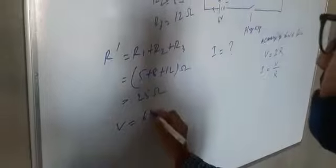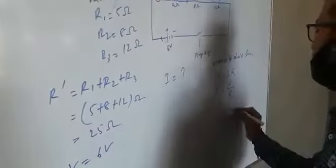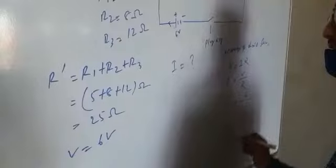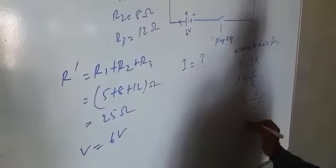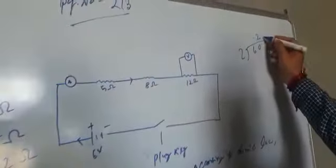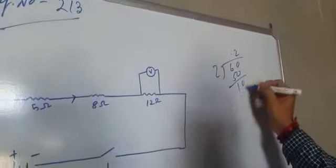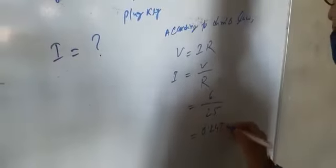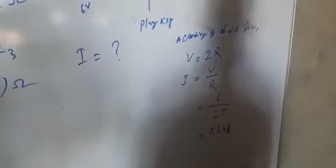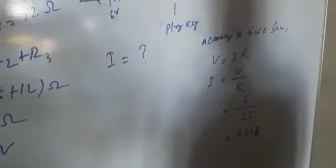The potential difference V equals 6 volts. Putting the values of V and R into I equals V divided by R: I equals 6 divided by 25, which gives 0.24 amperes. So the current flowing through the ammeter is 0.24 amperes.